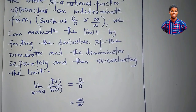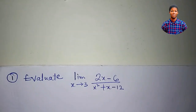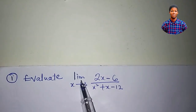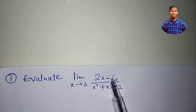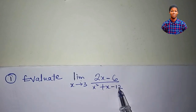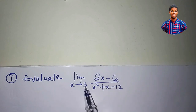So let's apply this rule now to solve some problems. Let's solve this first problem: the limit of 2x minus 6 divided by x squared plus x minus 12 as x approaches 3.